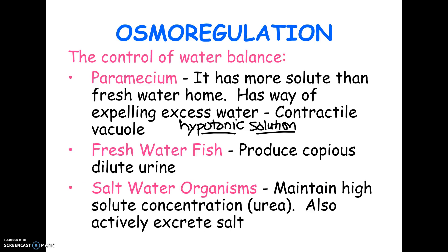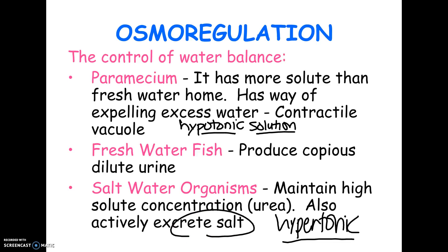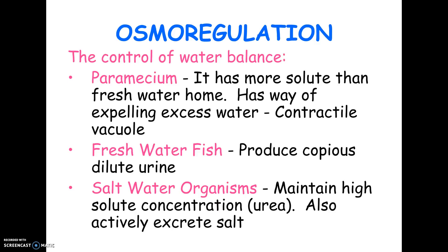Saltwater organisms have the opposite problem — they're living in a hypertonic environment. Plants that grow in the ocean, fish that live in the ocean, or saltwater crocodiles that drink saltwater all have to solve this problem. One way they solve it is that the concentration of solutes they keep in their body is actually higher than a freshwater organism. By having a higher solute concentration inside the cell, their cells match better with the saltwater. In addition, they have mechanisms to actively excrete the extra salt, and that way they can solve the problem.